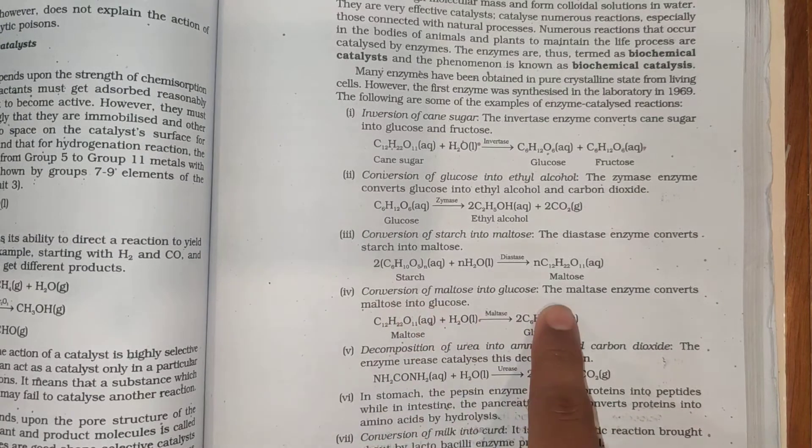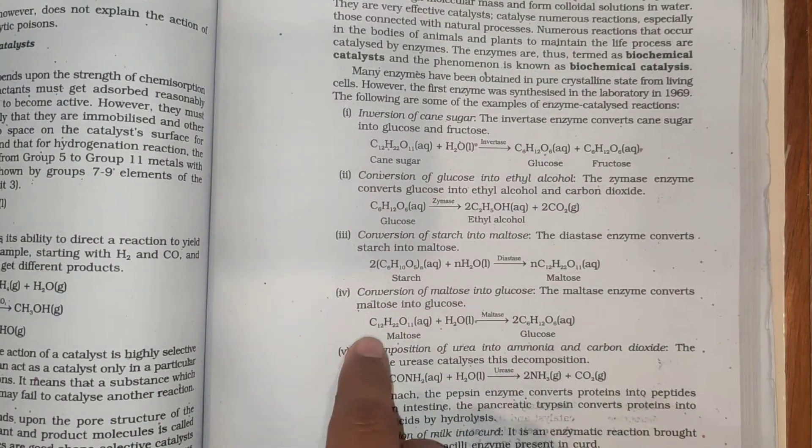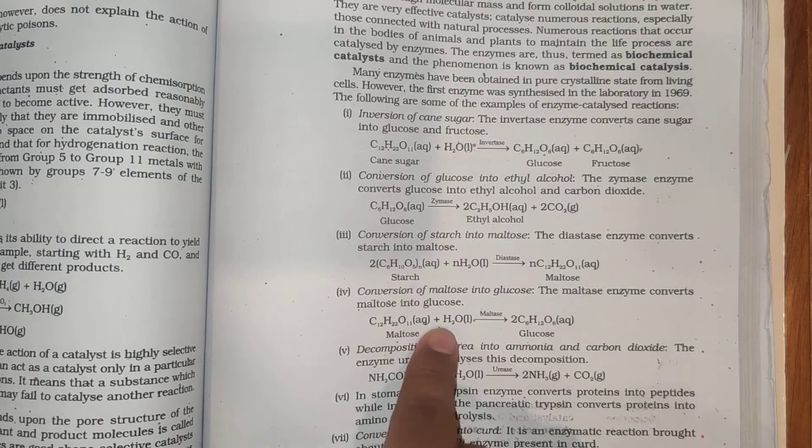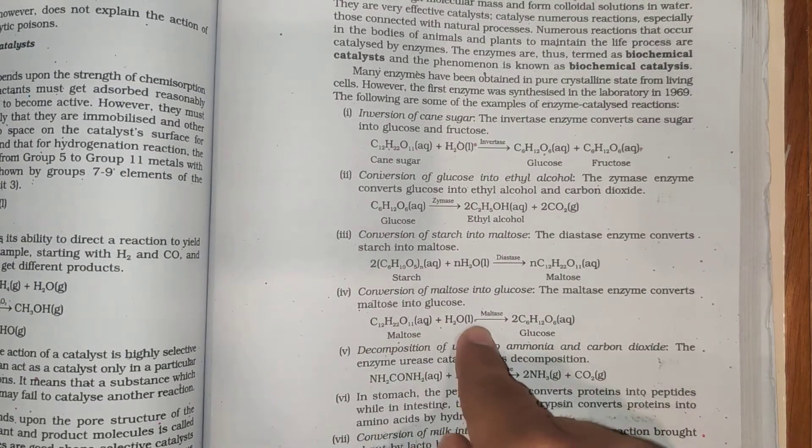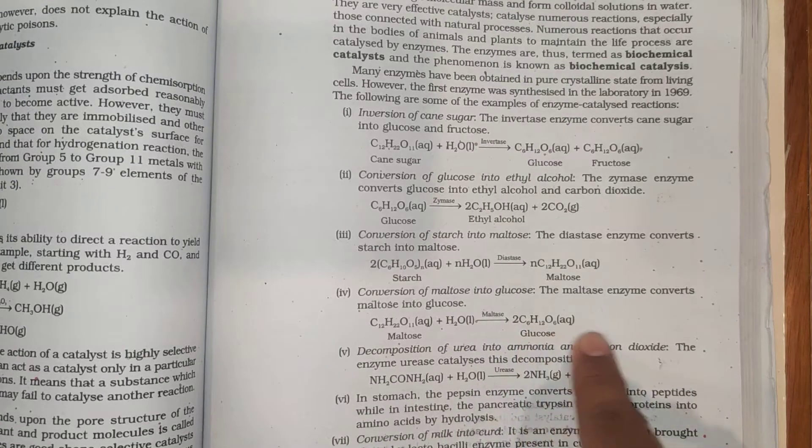Conversion of maltose into glucose: The maltase enzyme converts maltose into glucose. C12H22O11 (aqueous maltose) plus H2O in presence of maltase forms 2C6H12O6 (aqueous glucose).